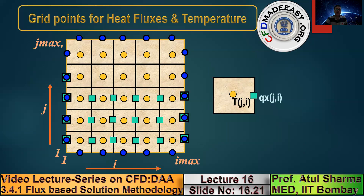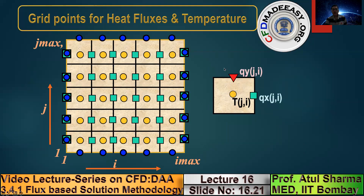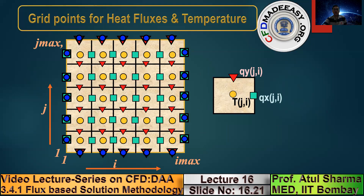For green squares (qx pixels), there are 6 in the x-direction and 5 in the y-direction, so the loop for qx varies from 1 to IMAX-1 in i, and from 2 to JMAX-1 in j. For red inverted triangles (qy pixels), there are 5 in the x-direction and 6 in the y-direction, so the loop uses i = 2 to IMAX-1 and j = 1 to JMAX-1. This is the computational stencil for a representative grid point.